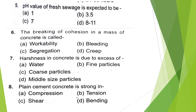pH value of fresh sewage is expected to be — 1, 3.5, 7, or 8 to 11? The answer is option D.